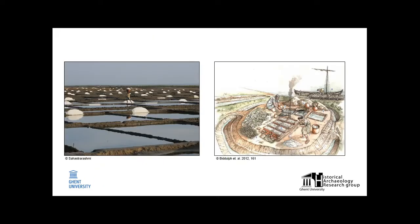There were two ways to produce salt. On the one hand, salt could be produced in a salt pan using natural evaporation, as you can see in the picture on the left, a method still used today. On the other hand, salt could be produced by artificially heating brine. In Northern Europe, however, climatological conditions prevented the use of natural evaporation, so only the more complex artificial method was available.